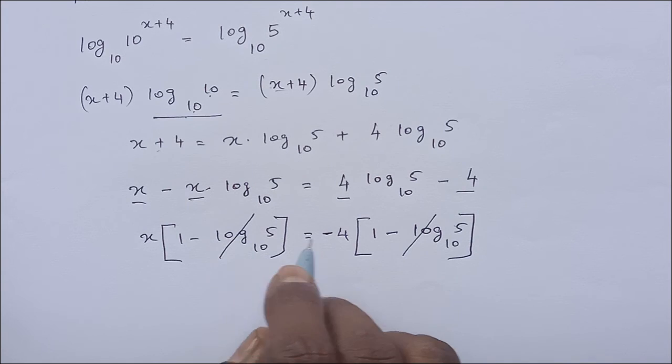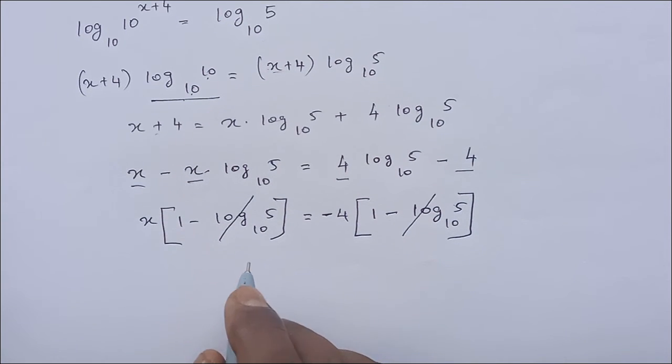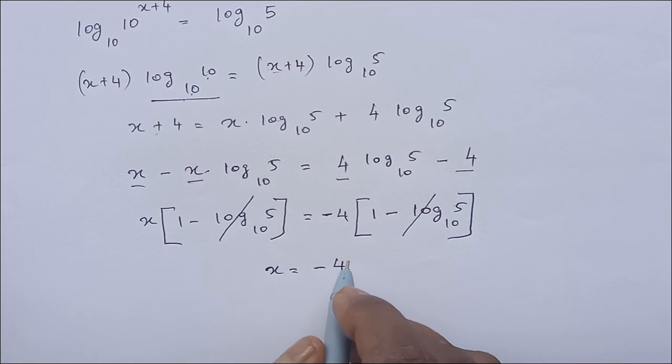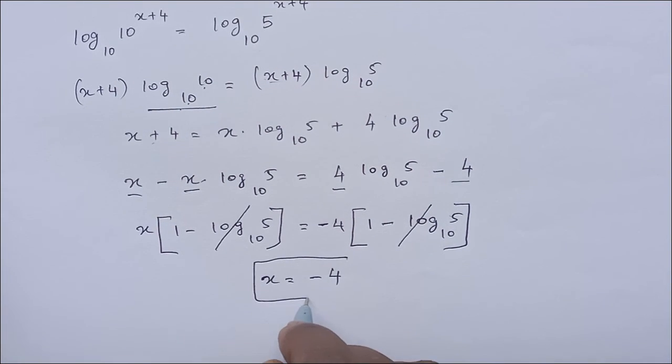is there, so we can cancel this. So it means we end up with x is equal to minus 4. So the answer for this question is x is equal to minus 4.